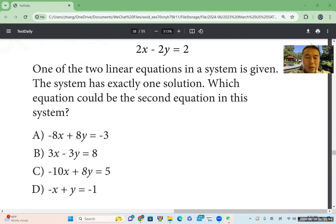Here is a linear equation. One of the two linear equations in a system is given. The system has exactly one solution. Which equation could be the second equation in this system? Let's have a quick review.